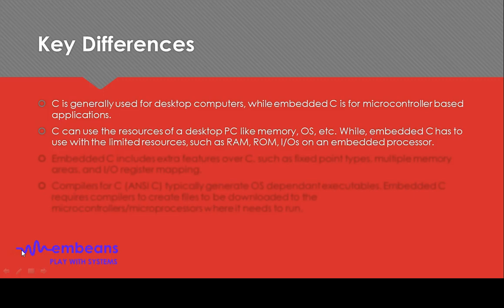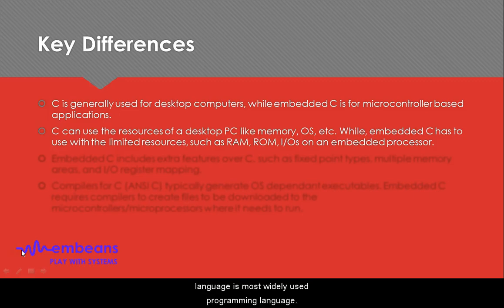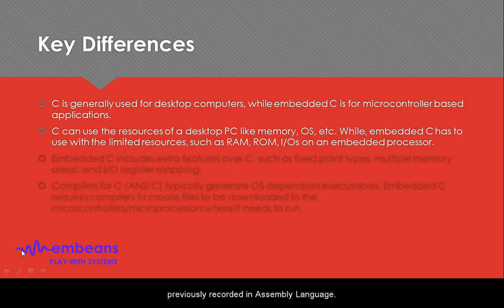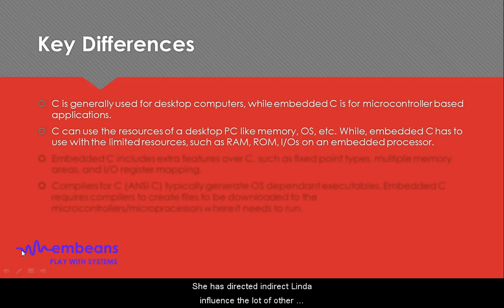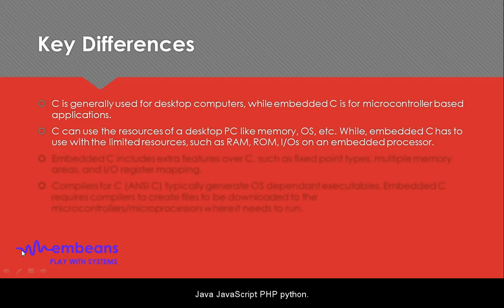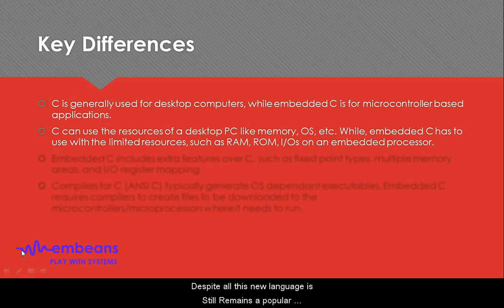C is one of the oldest and most widely used programming languages. It has been constantly used in applications that had previously been coded in assembly language, including the Unix and Linux operating systems. C has directly or indirectly influenced many other programming languages like C++, Java, JavaScript, Perl, PHP, and Python, yet despite all these new languages, C still remains a popular programming language.